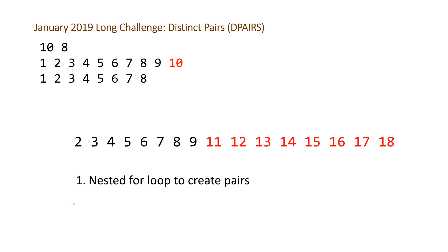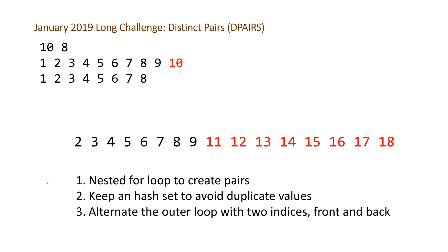To recap: step one is a nested for loop to create pairs; step two is a hash set to avoid duplicating values; and the most important part for a full pass is to alternate the outer loop with two indices — one for the front and one for the back. Without step three you can still get a quarter of the points, but to get a full passing solution you need this alternating approach. There may be other solutions but this is how I went about it.